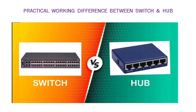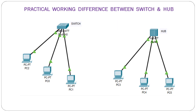So let's start the video. We are going to form two networks — one LAN with the help of a switch and three PCs, and another LAN with the help of a hub and three PCs. Let's start building these networks on Cisco Packet Tracer.